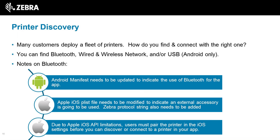An important caveat when working with Xamarin across operating systems: it must behave as a native application, so there are OS-specific considerations. For Bluetooth, the Android manifest needs to be updated. On Apple, Bluetooth is trickier — there's a Made for iPhone requirement. The majority of Zebra's Link OS products are MFi certified, but you must pair the printer in iOS settings first — you can't do it all programmatically. That's an Apple restriction to be aware of.